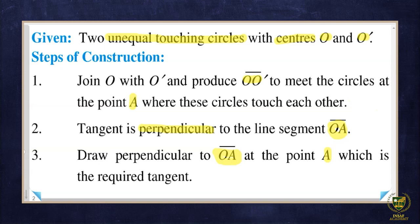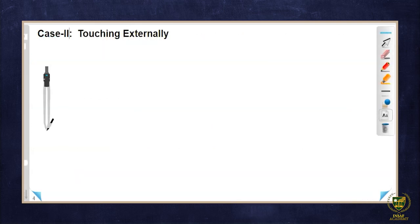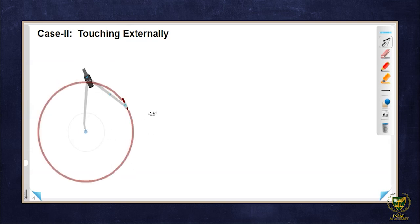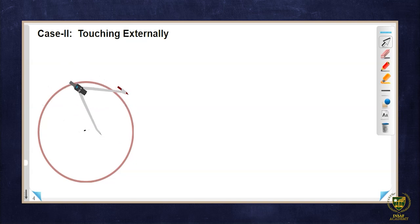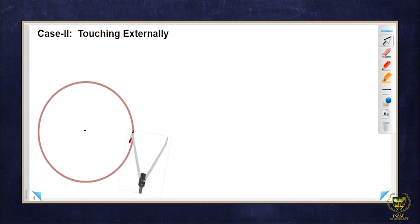We have done Case 1. Now we are moving to Case 2. In Case 2, the circles touch externally — two unequal circles touching externally. I'll draw one circle here like this. Here is the first circle.